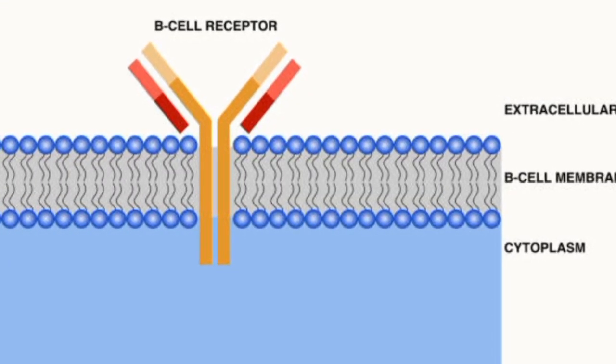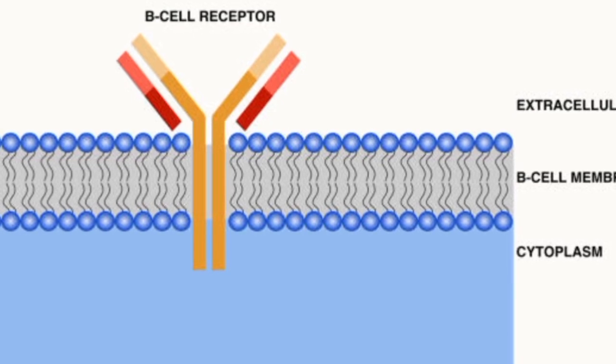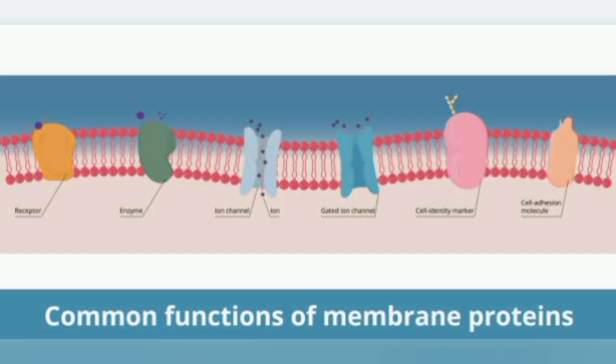Cell communication: Cell-cell recognition and communication are facilitated by proteins on the membrane's surface, which allow cells to recognize each other, interact, and transmit signals.